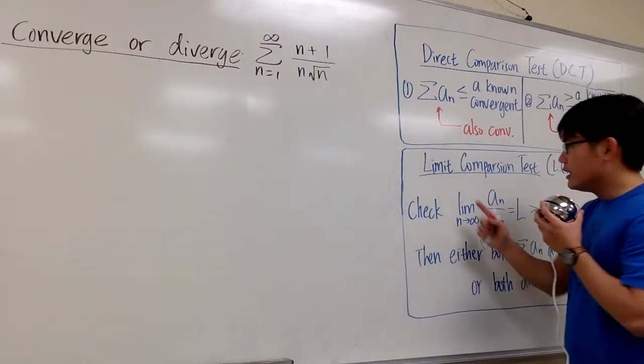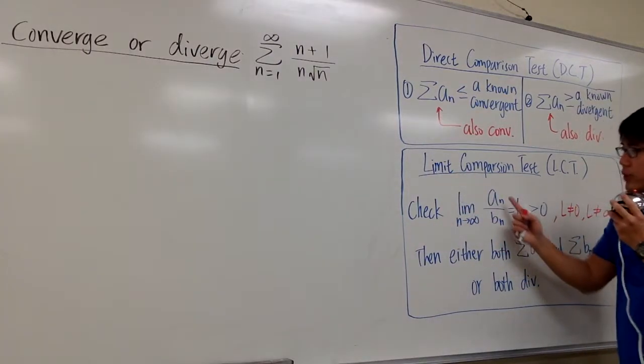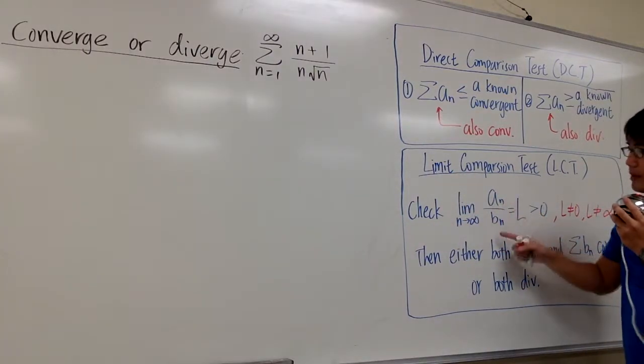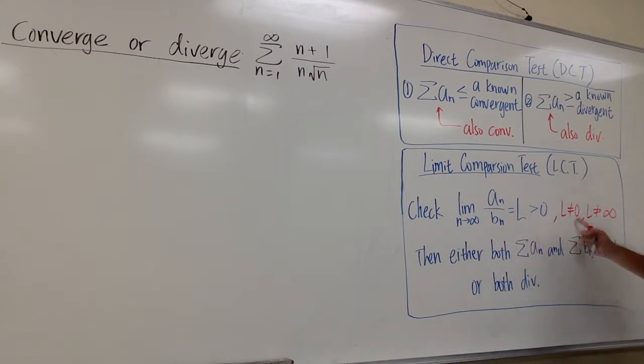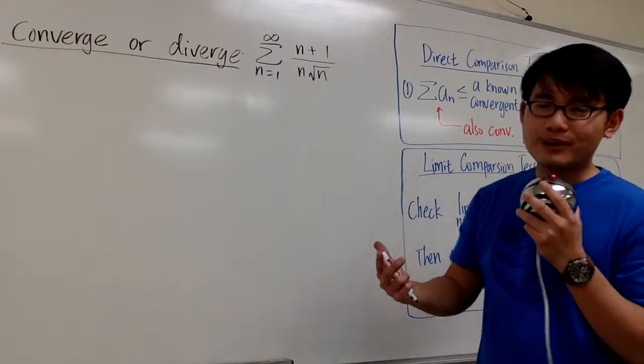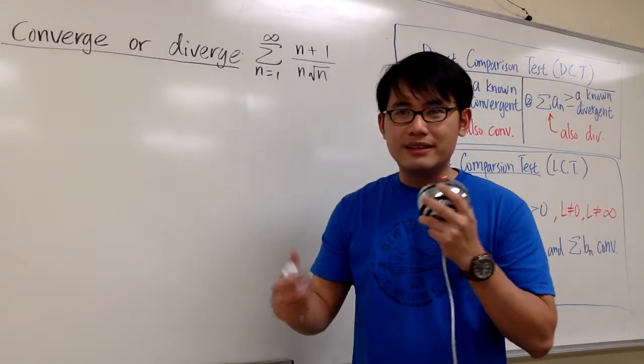And as you can see, in terms of the limit comparison test, if we can show that the limit of a_n over b_n is equal to L, where L is a positive number, where it's not zero and it's not infinity, we get to say something about sigma of a_n and sigma of b_n.